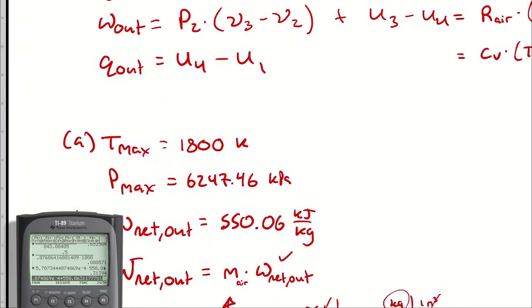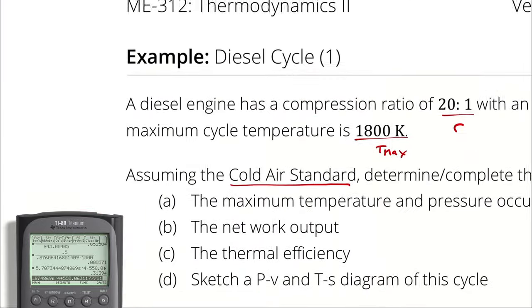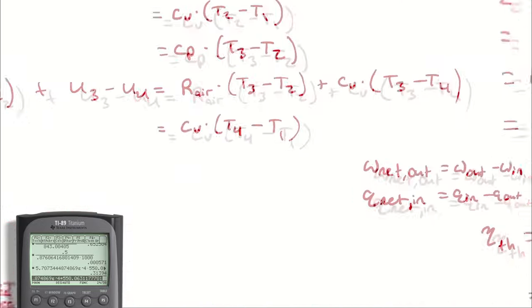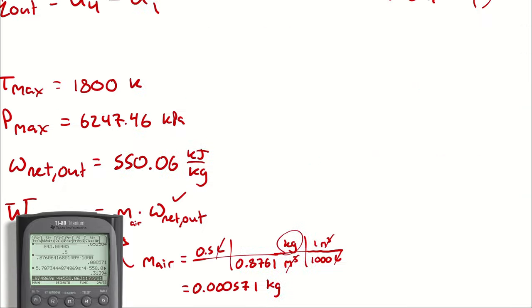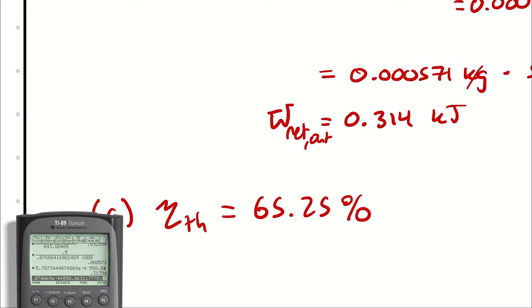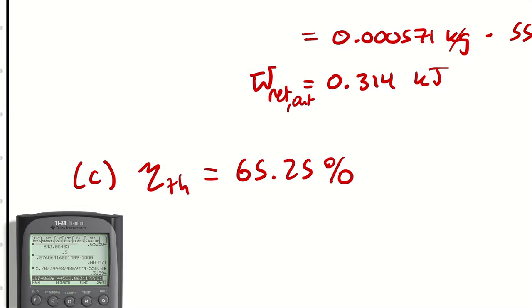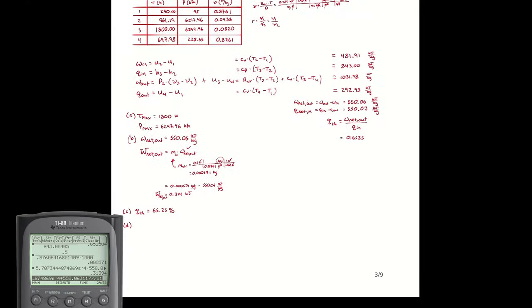Part C: Thermal efficiency is 65.25%. We already calculated this from net work out divided by Q_in.